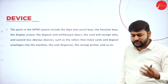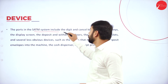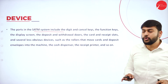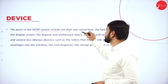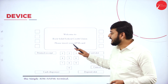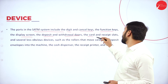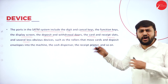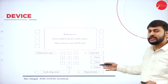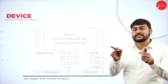The ports in a SATM system include: digits, cancel key, function keys, display screen, deposit slot, withdrawal and card slot, receipt slot, and several less obvious devices. All these things are called ports in the SATM machine. You can observe digits, screens, special keys, and deposit slots — all of these are ports.